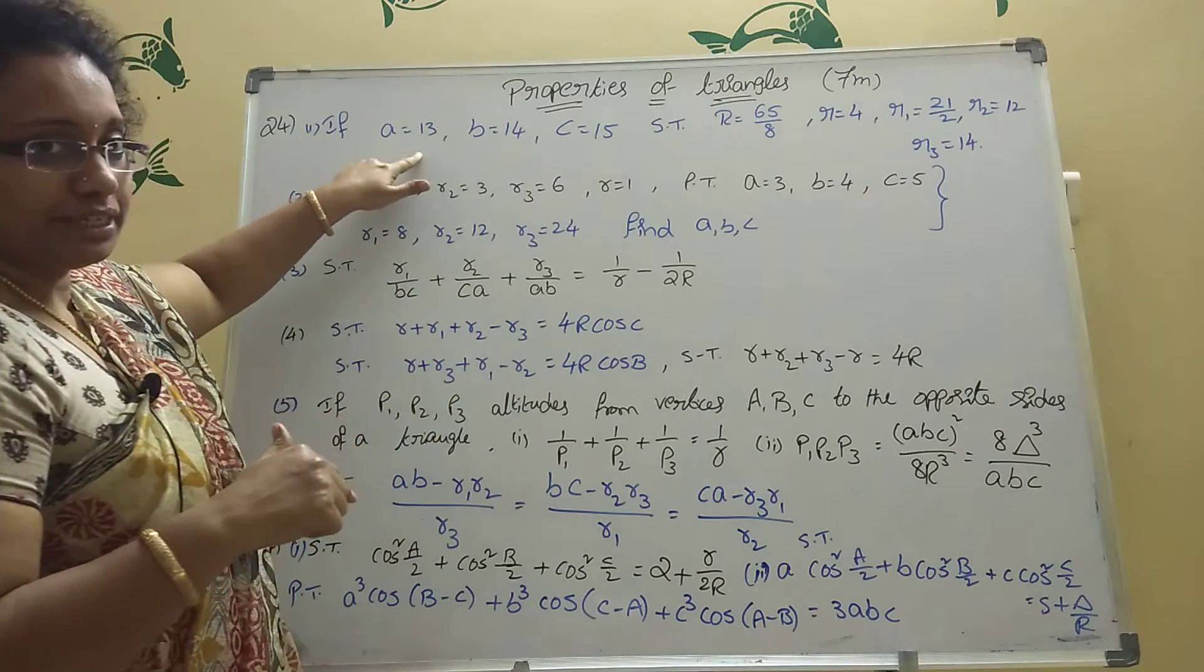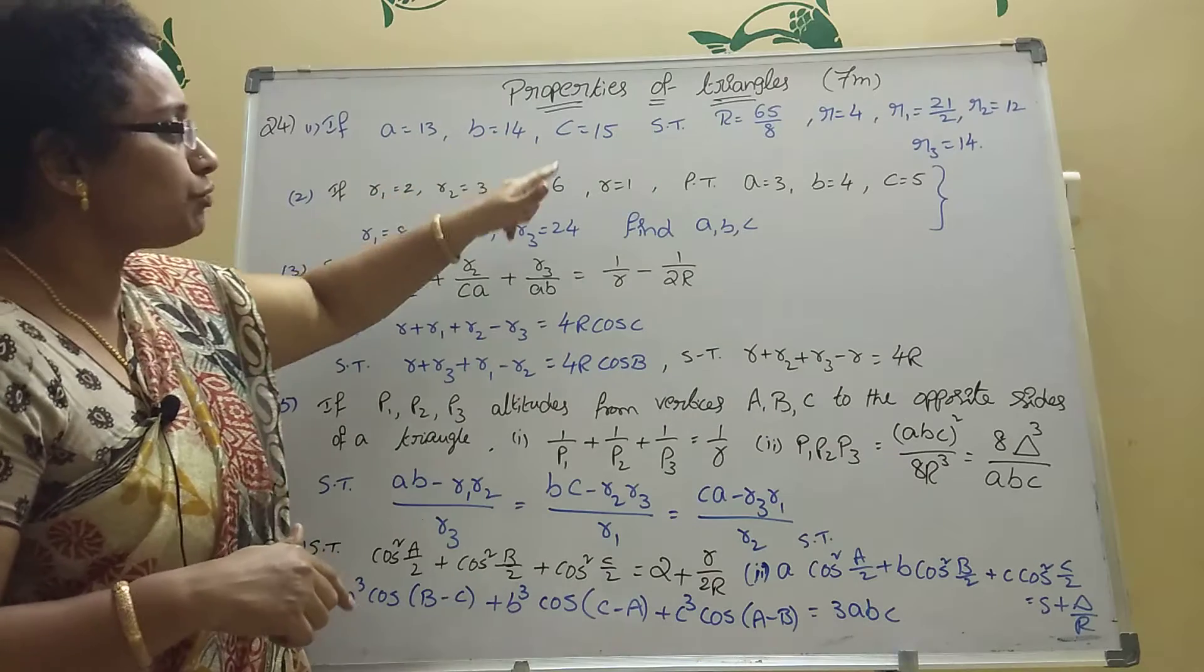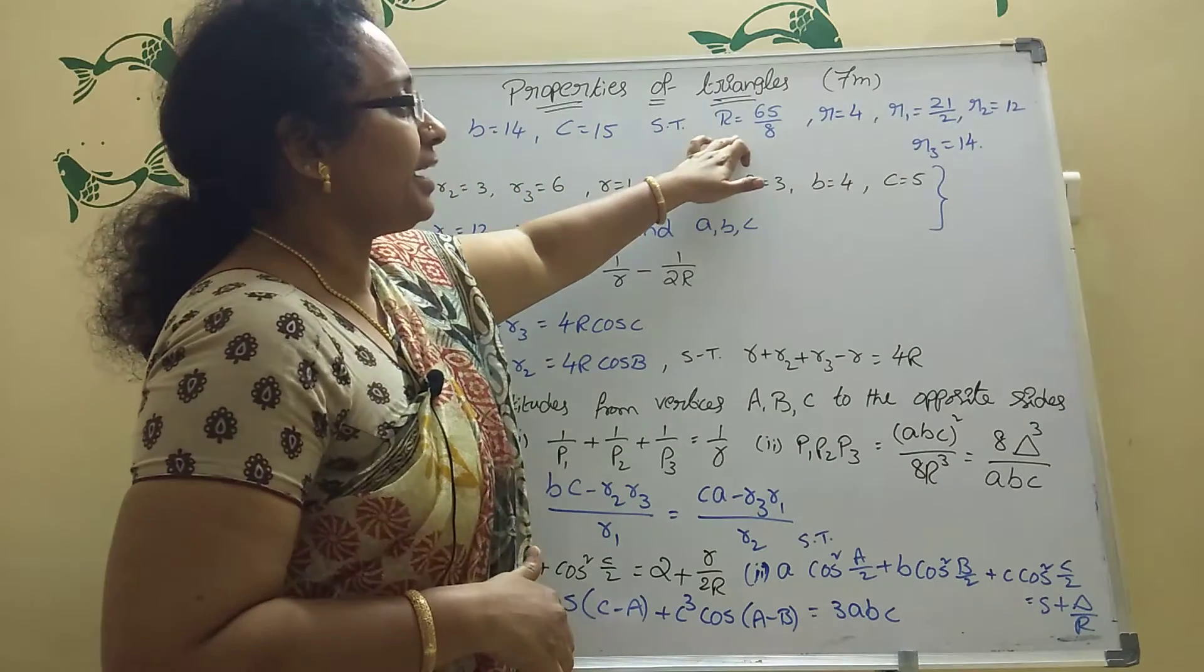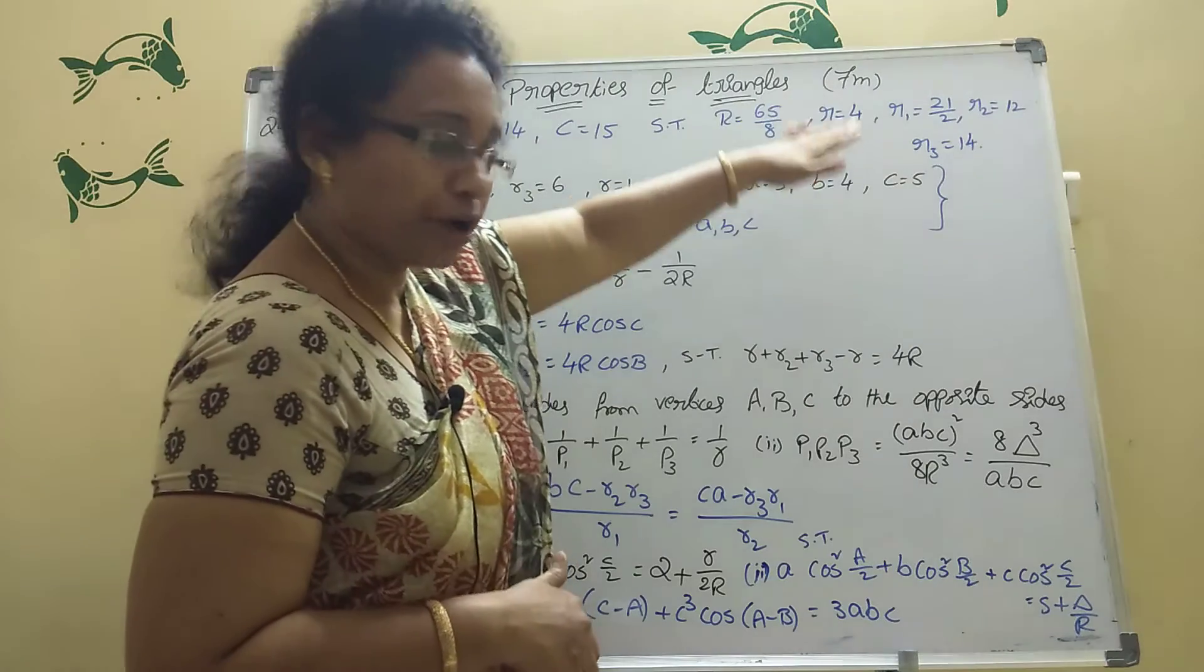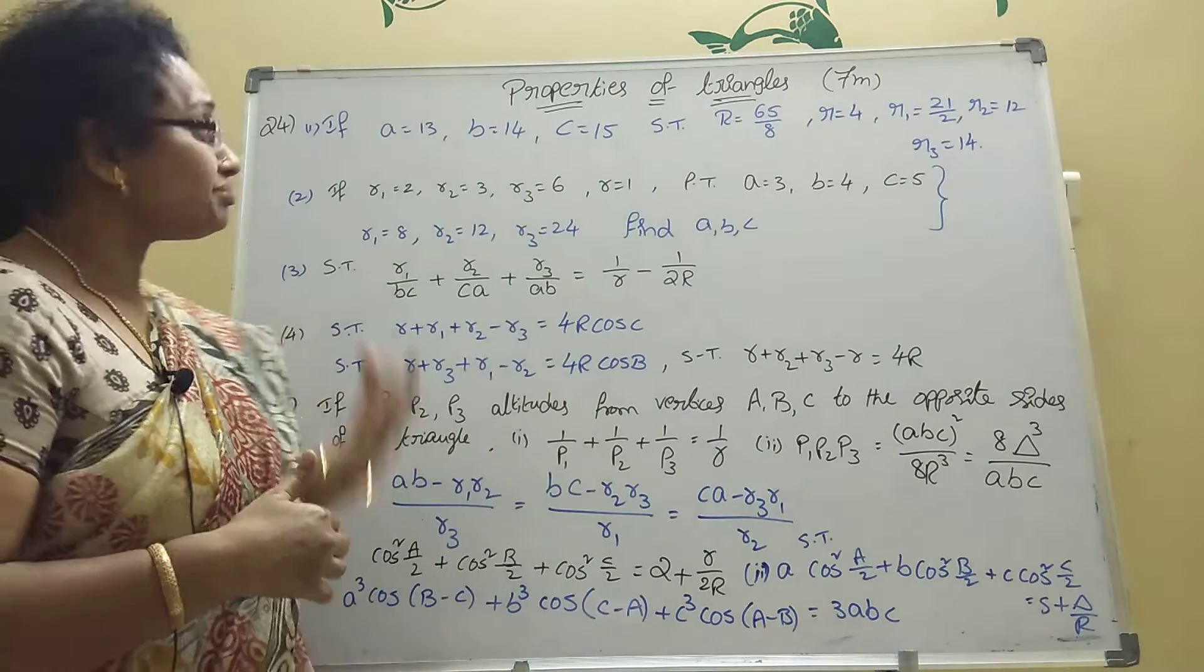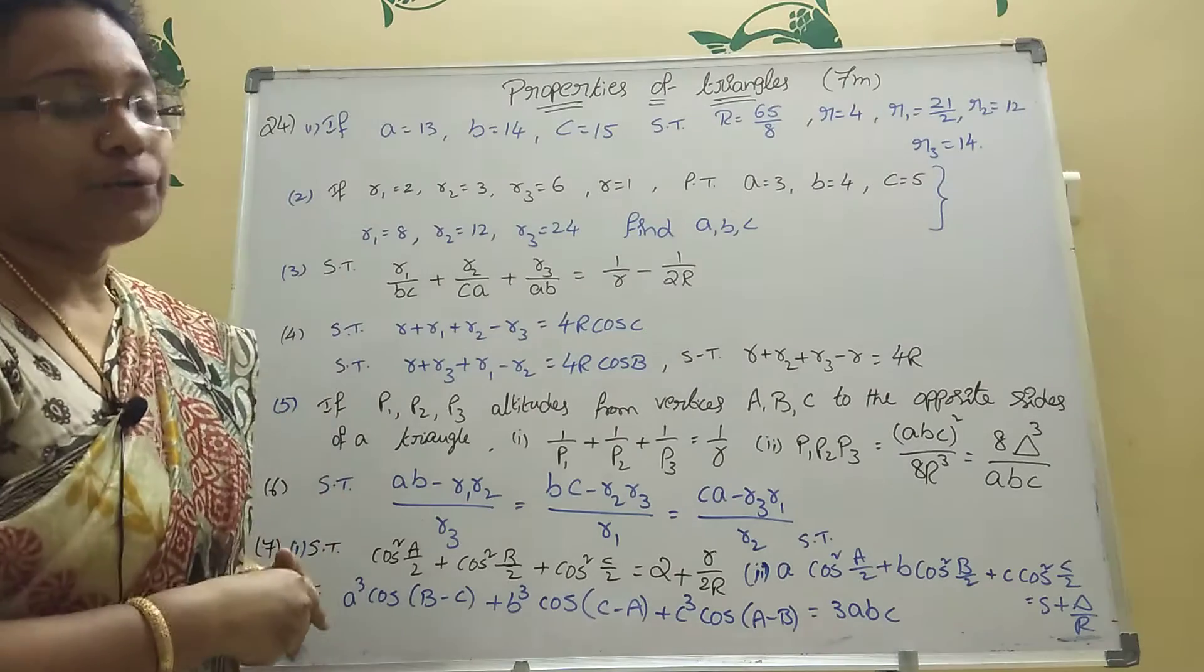Now if A equal to 13, B equal to 14, C equal to 15 is given, then you should prove that R equal to 65 by 8, small r equal to 4, R1, R2, R3. You should find small r, R1, R2, R3. Here ABC is given.